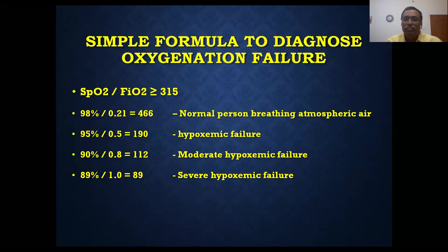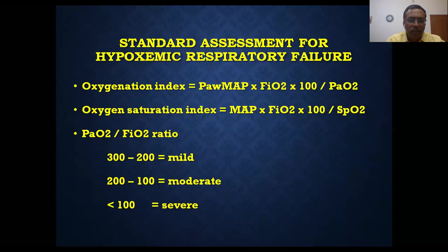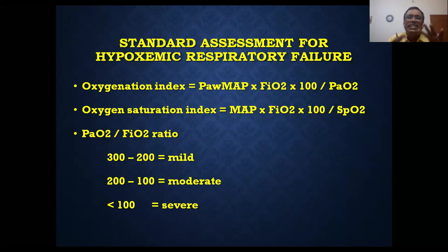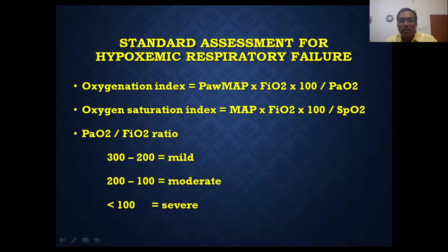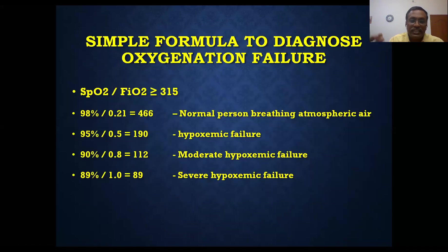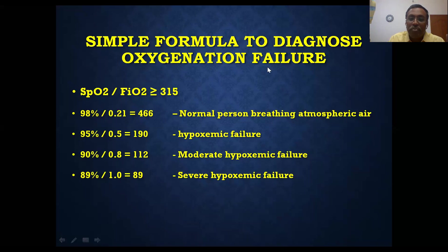Without using ABG, we can identify the grade and level of respiratory failure using this simple ratio. The more formal oxygenation index, saturation index, PAO2/FiO2 ratio, and mean airway pressure calculation using a ventilator are available but not always necessary. The previous approach using SpO2/FiO2 is sufficient for identifying the grading of respiratory failure non-invasively.